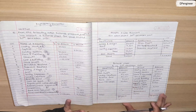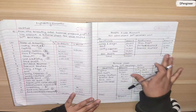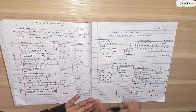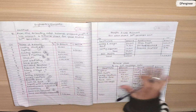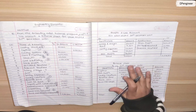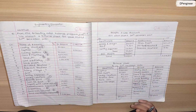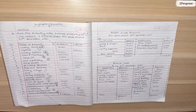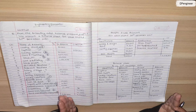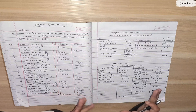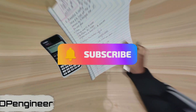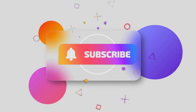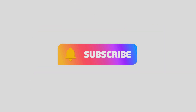So the balance sheet table and profit and loss table are both complete. The left-hand side amount and right-hand side amount are equal, so our work is ready. Thank you. If you have any confusion, please leave a comment below. Please like and subscribe to the channel.